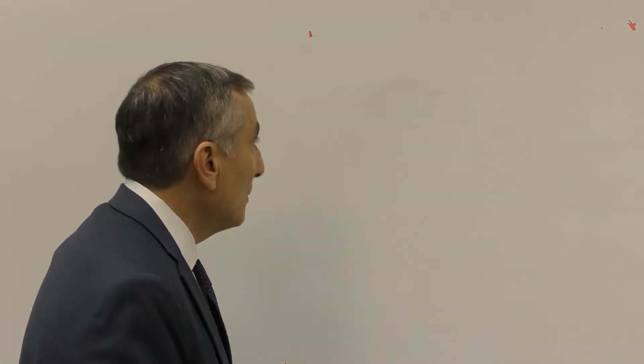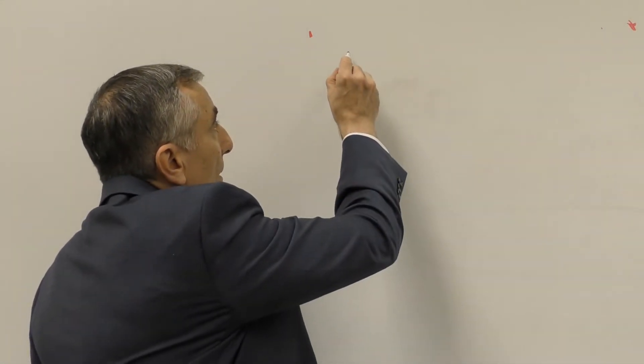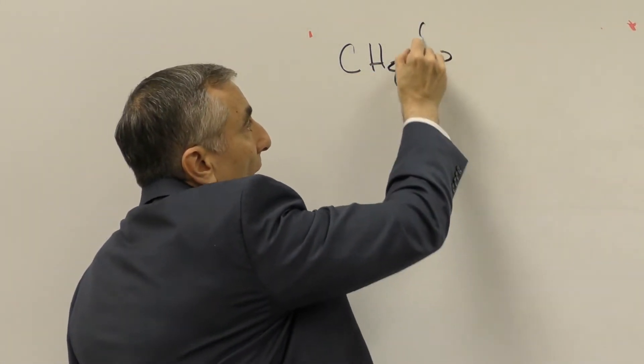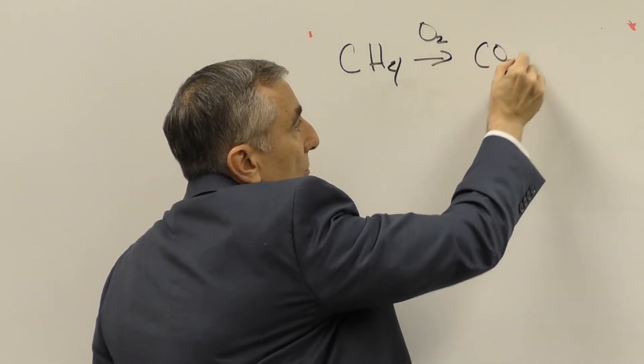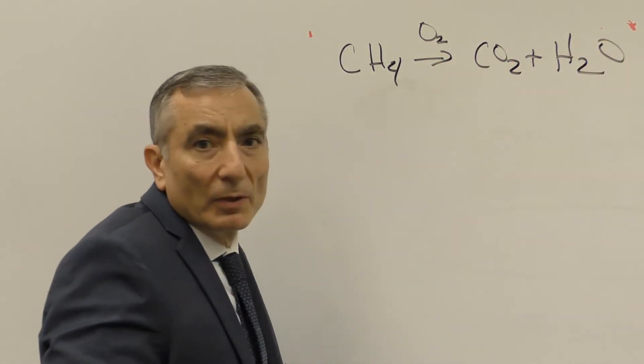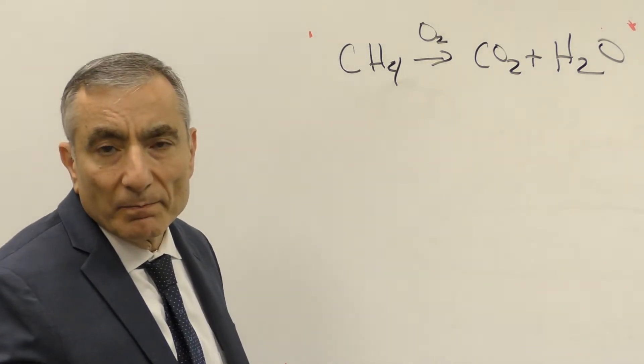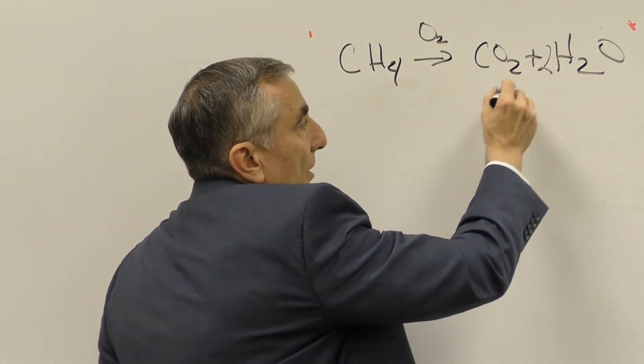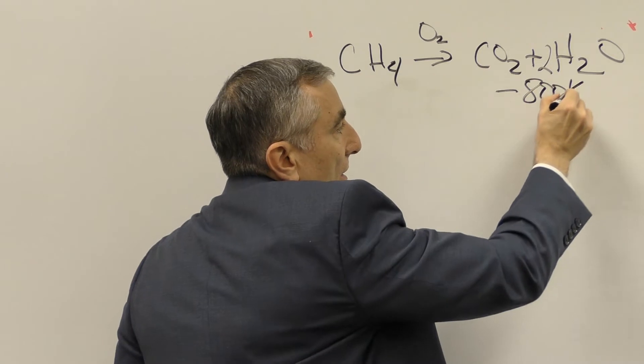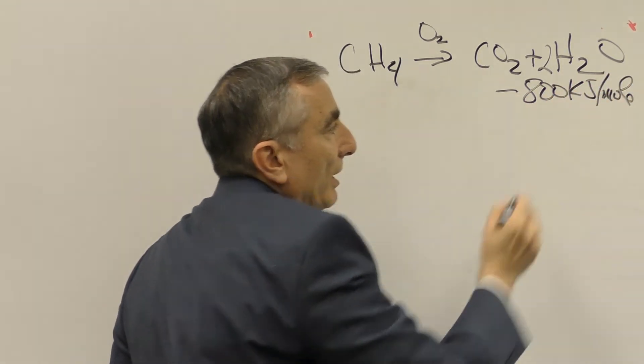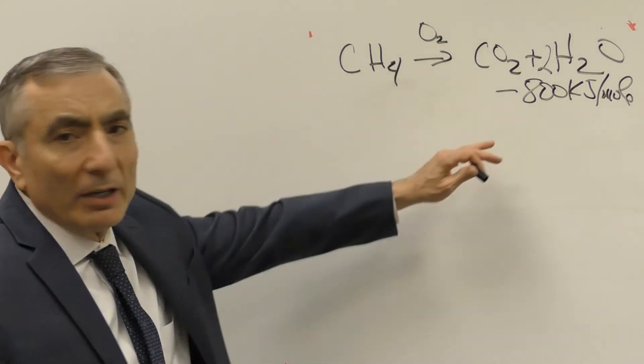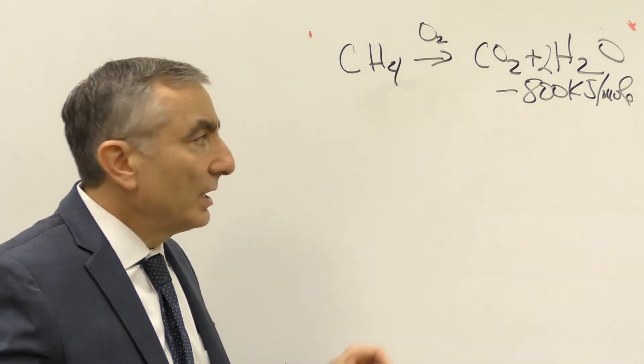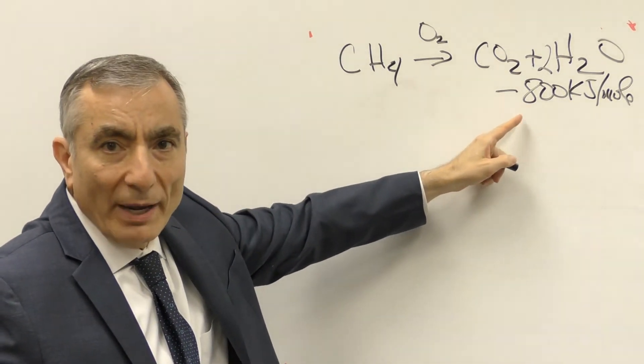So right now, what's done is people take methane, CH4, and they combust this with oxygen and they go to CO2 plus water, carbon dioxide and water. So with that carbon dioxide and water, we would have two waters here. This will afford 800 kilojoules per mole of energy. Now that number is meaningless to most people, but let's think about this for a minute. Just remember that number, we have that here and we'll compare it to another number.